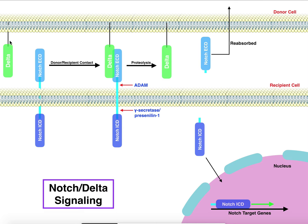The donor cell expresses a protein in its membrane extracellularly called Delta, situated in the membrane. The recipient cell expresses Notch. Notch has three general domains: an extracellular domain (ECD), an intracellular domain (ICD), and a transmembrane domain that connects the extracellular and intracellular domains and spans the membrane. Initially, the donor cell and recipient cell may not be close enough, so Delta and Notch are not in physical contact with one another.